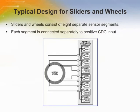A slider can be constructed using between five and eight discrete sensor segments depending on the sensor length. The scroll wheel is a special type of discrete slider where each of the discrete segments is arranged in a circular shape. Sliders and wheels consist of eight separate sensor segments, each connected separately to the positive CDC input, similar to button connections. When scrolling, the user interacts with more than one segment.